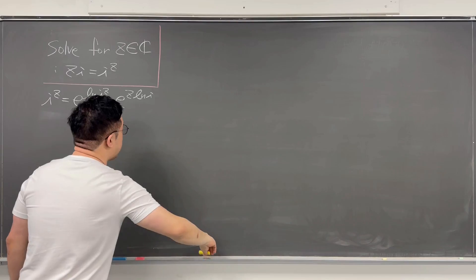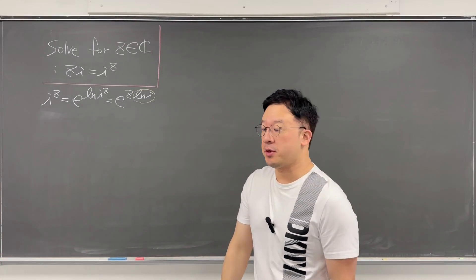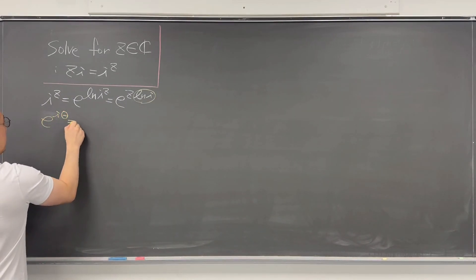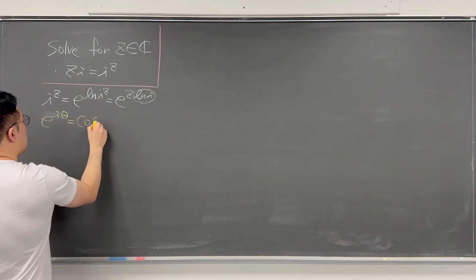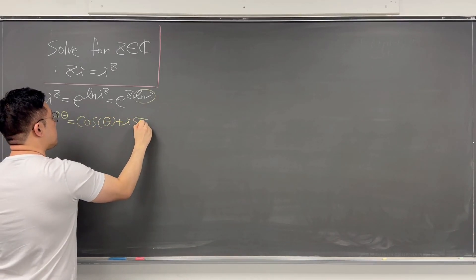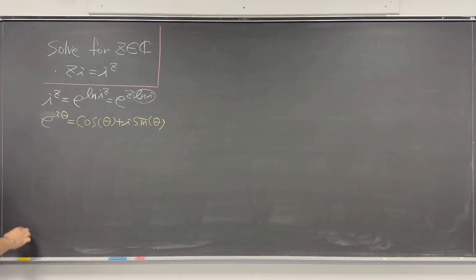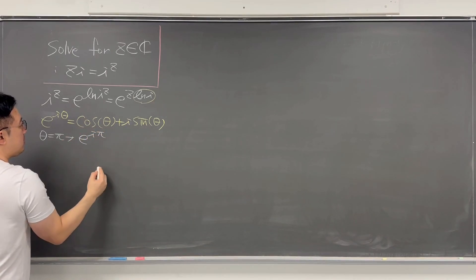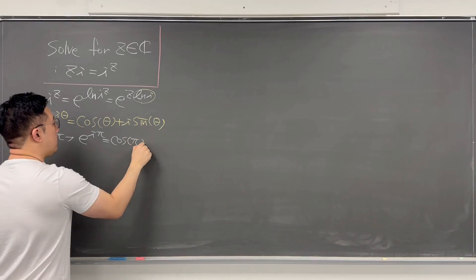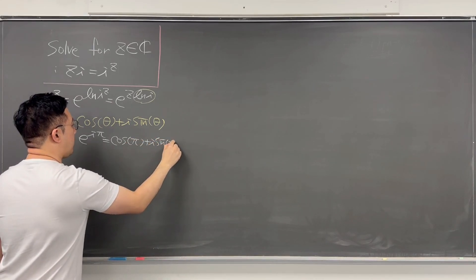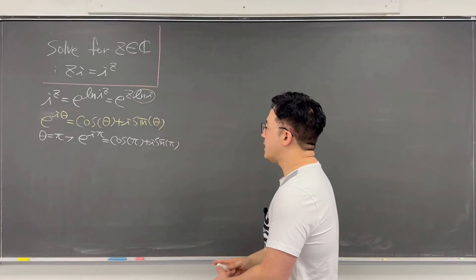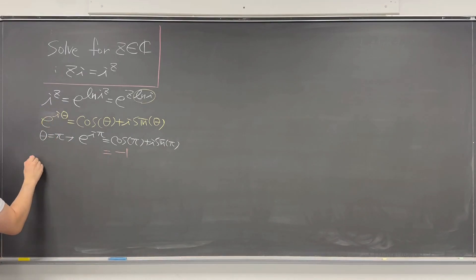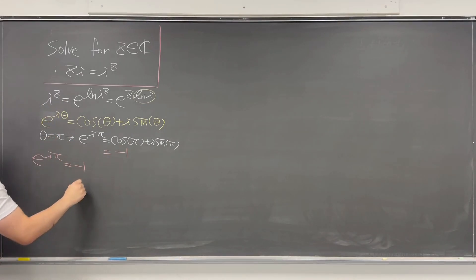Let's talk about ln of i in more detail using Euler's formula. Euler's formula is e to the power of i*theta, which equals cosine(theta) plus i times sine(theta). If theta equals pi, then we have e to the power of i*pi equal to cosine(pi) plus i times sine(pi), so the right-hand side equals negative 1.